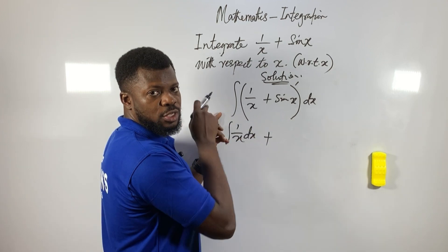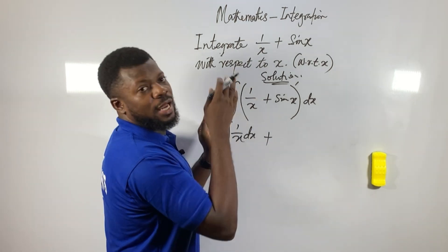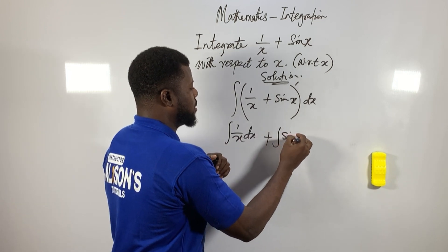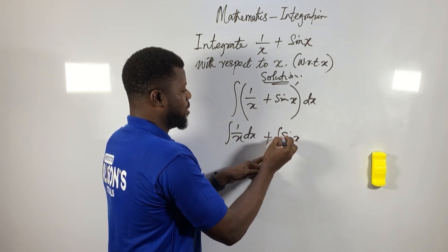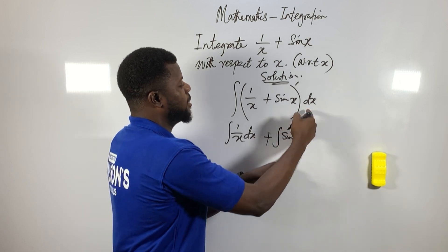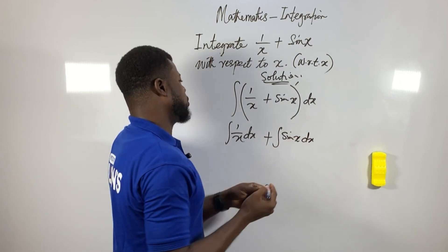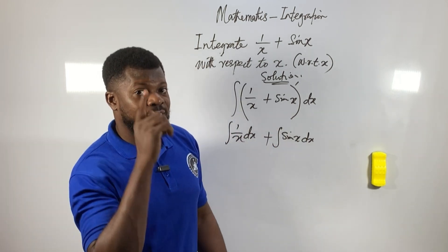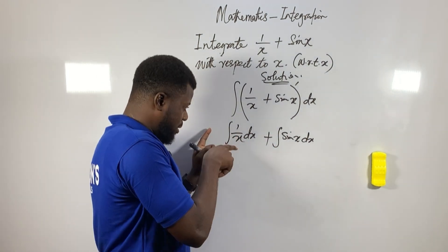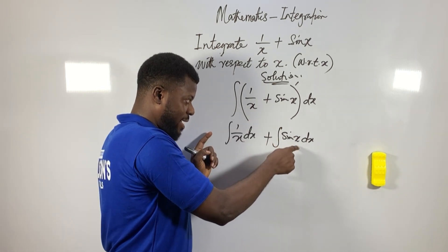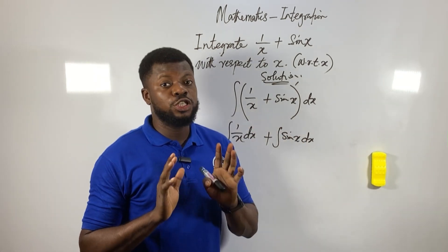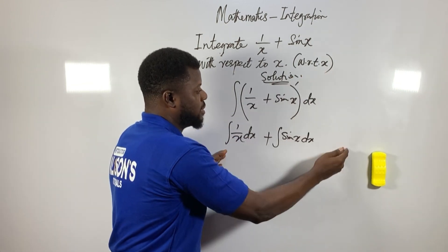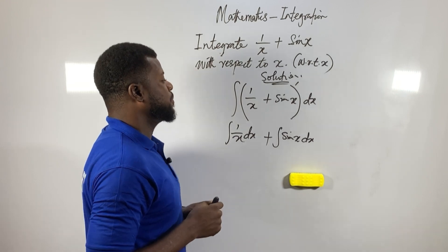...plus the integral of sin x with respect to x. That's it — if you distribute and clear the bracket, the integral of (1/x + sin x) becomes two separate integrals. We now want to integrate each one: integrate (1/x) with respect to x, and integrate sin x with respect to x. I want to share a few things before we finish.